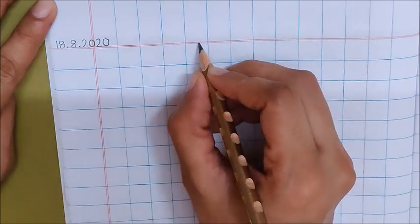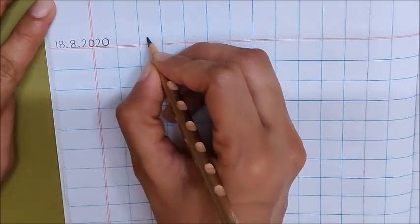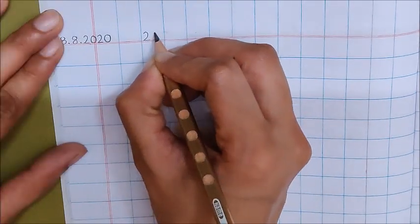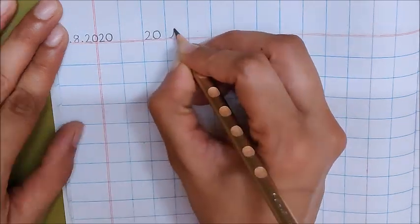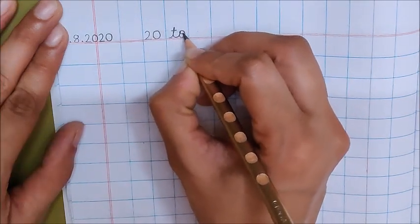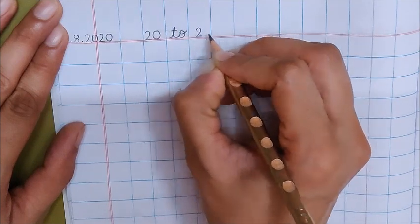Now on the red line write down 20 to 29.